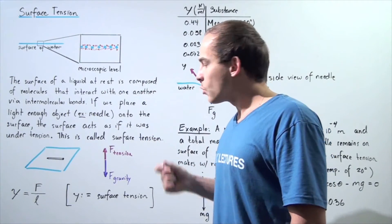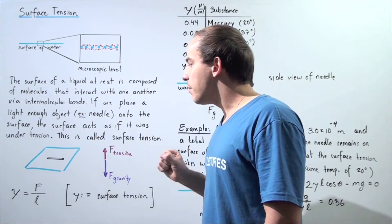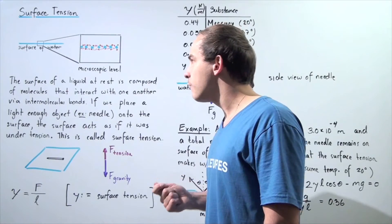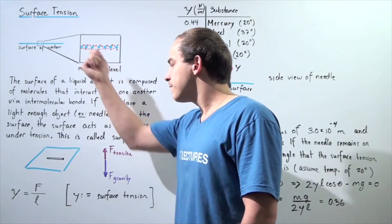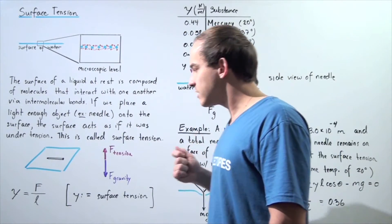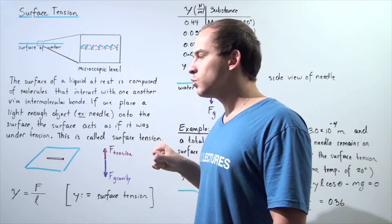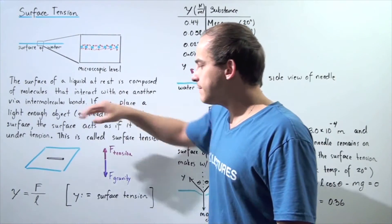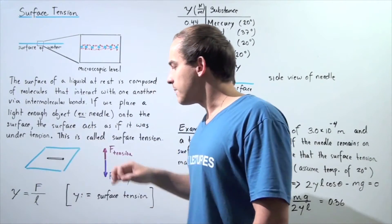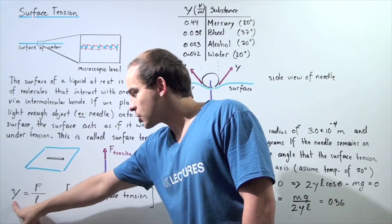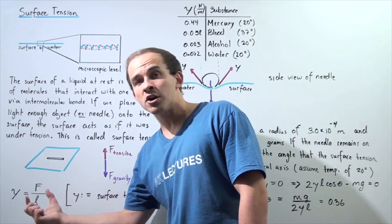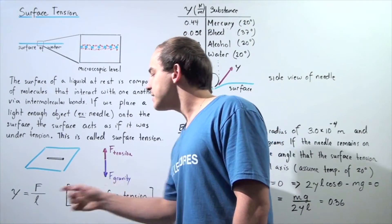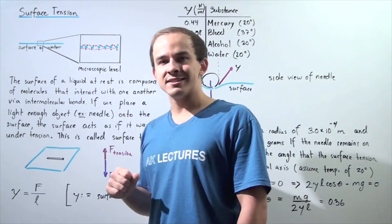Here we have a diagram of a needle resting on top of a sheet of water. The intermolecular bonds between the individual water molecules on the surface create a tensile force called surface tension, which resists the force of gravity — that's exactly why our needle remains in static equilibrium on top of the water. Surface tension is defined by the formula: surface tension γ equals the force acting perpendicular to the surface divided by L, the length on which our object rests.